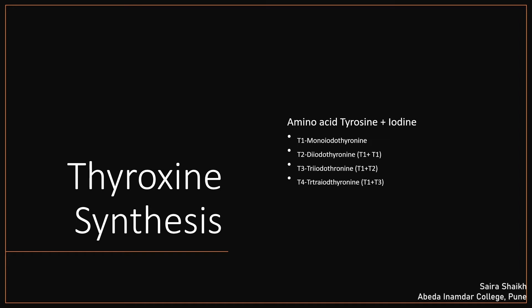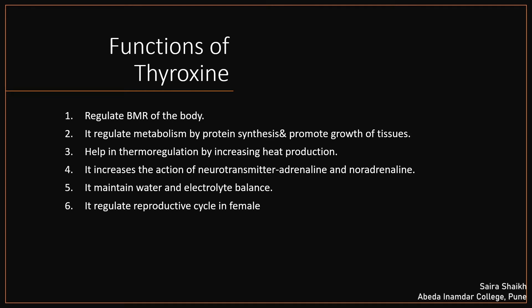Out of T3 and T4, T3 is more active compared to T4. Thyroxine hormone helps to regulate the BMR — basal metabolic rate — of the body, which controls protein metabolism, carbohydrate metabolism and fat metabolism. The second function of thyroxine is to regulate protein synthesis. As it controls protein synthesis it also controls the growth of tissue, because different types of proteins required for tissue growth are synthesized in presence of thyroxine.